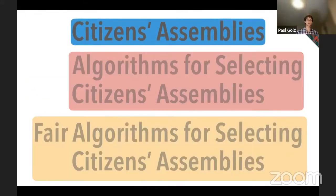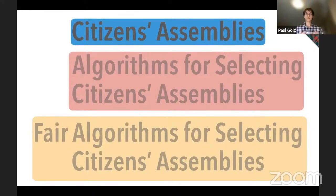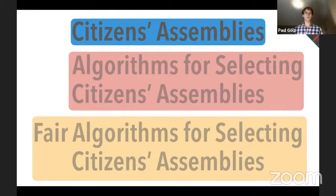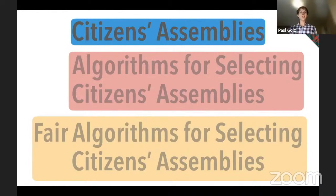So, what are citizens' assemblies? When thinking about recent news — maybe about COVID policy — something often in the background is the assumption that making policy decisions is really hard and should be left to professionals. Citizens' assemblies are based on a completely opposed philosophy: the premise that if you take a random sample of citizens, put them in a room, and support them in their deliberation, they can come to good conclusions and make recommendations that are both qualified and supported by a broad set of people in the population.